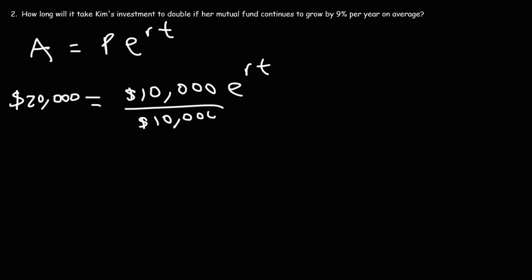So first, we're going to divide both sides by 10,000. These two numbers will cancel. 20,000 divided by 10,000 is 2. So we get this. Now in order to solve for T, we need to take the natural log of both sides of the equation.